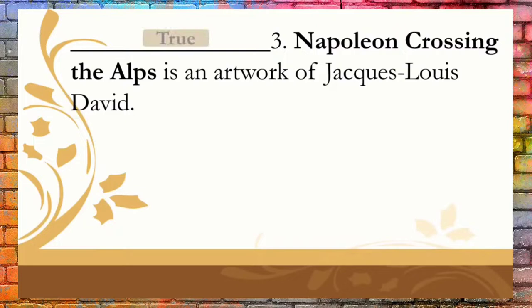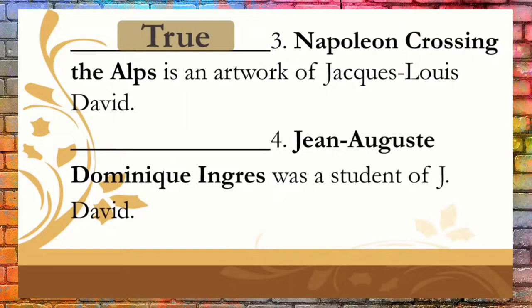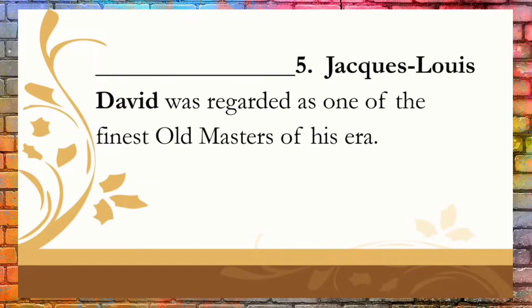Statement 4: Jean-Auguste-Dominique Ingres was a student of J. David. The correct answer is true. Statement 5: Jacques-Louis David was regarded as one of the finest old masters of his era. The correct answer is false.